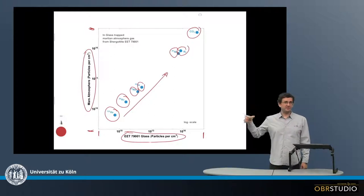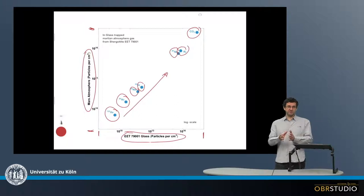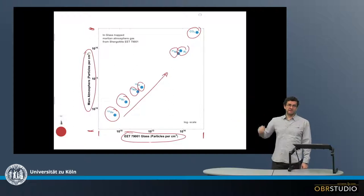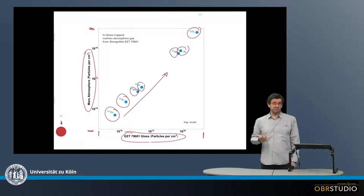Now this is from a shergotite, and then there are related meteorites like nakhlites and chassignites, together often called, grouped as SNC meteorites, and these are all Martian meteorites. And this plot is the great evidence that these meteorites really originated from Mars.